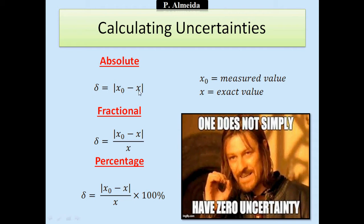Then you have the fractional one. That's going to be a fraction, as the name says. That one is not going to have units, while the first one does. It's going to be the module of the measured value minus the exact value, the same as the absolute uncertainty, but divided by x where x is the exact value.